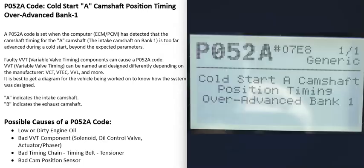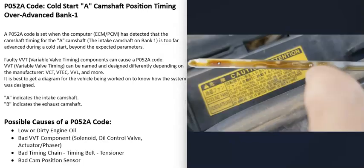The first possible cause of a P052A code is low or dirty engine oil. The computer controls variable valve timing using oil pressure, so oil flows through all the VVT components. If the oil is low, really dirty, or the wrong type was used, that can affect the variable valve timing and cause issues. The first thing to do is check the engine oil and make sure it's good.